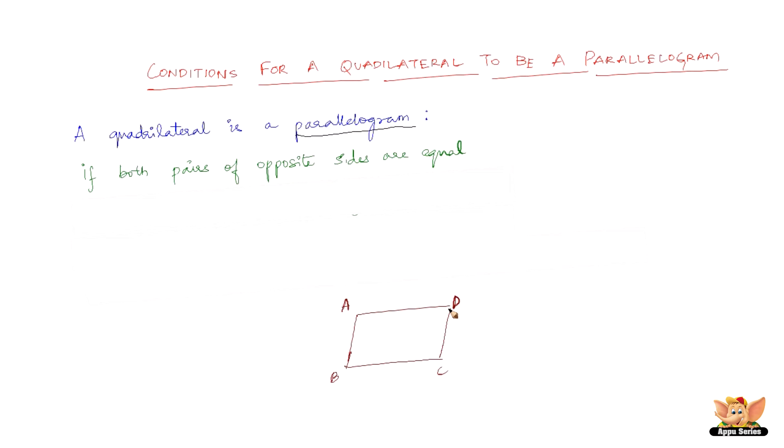Let us consider ABCD. Now, if both pairs of opposite sides, that is if AD and BC and AB and DC are equal, then the given quadrilateral is definitely a parallelogram.